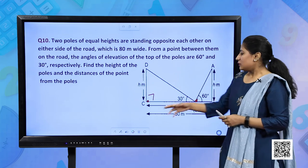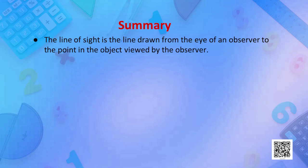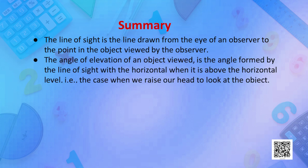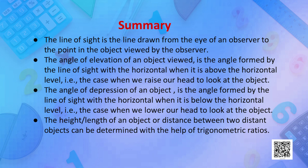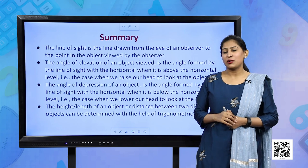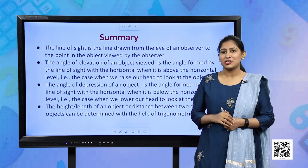Let us summarize. Line of sight is the line drawn from the eye of an observer to the point in the object viewed by the observer. Angle of elevation is the angle formed by the line of sight with the horizontal when it is above the horizontal level. Angle of depression is the angle formed by the line of sight with the horizontal when it is below the horizontal level. Height or length of an object, or distance between two distant objects, can be determined with the help of trigonometric ratios. Thank you.